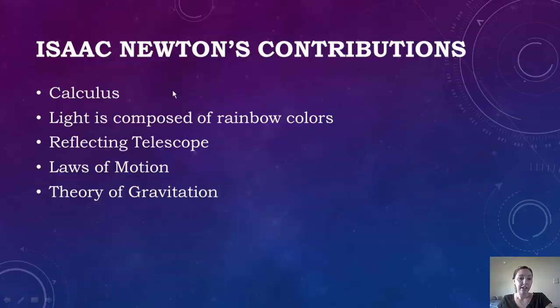First off, he invented calculus, which I know that we all love and enjoy today. He came up with the idea that light is composed of rainbow colors, so all of the colors that you see are because light is reflecting off of them, and that's the reason why you see all these different colors.